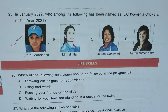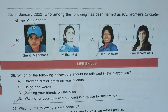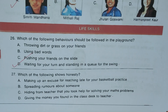Life Skills section. Question 26: Which of the following behavior should be followed in the playground? A) Throwing dirt on your friends, B) Using bad words, C) Pushing your friends, D) Waiting for your turn and standing in a queue for the swing. Correct answer is D.